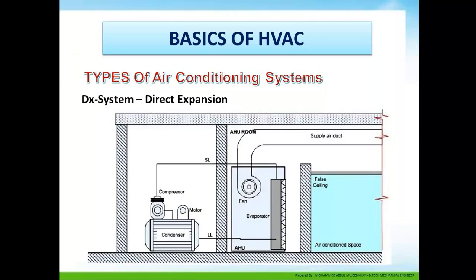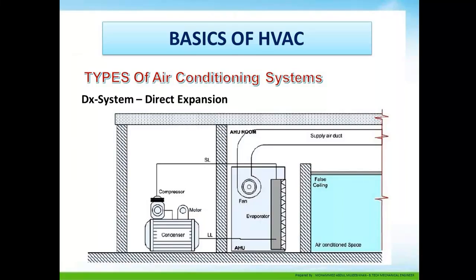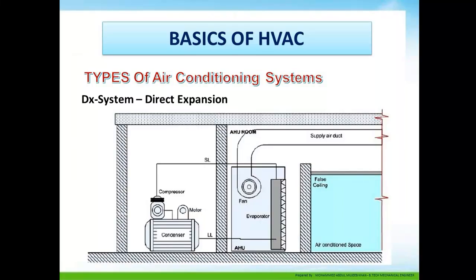A typical example of a direct expansion system: you can see the compressor, condenser, expansion valve, and the fan — also known as the blower — in a closed circuit where the refrigerant itself is the source of cooling.